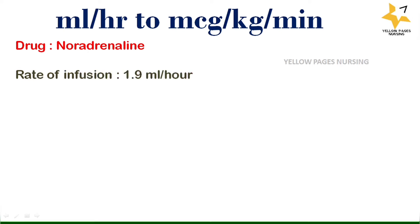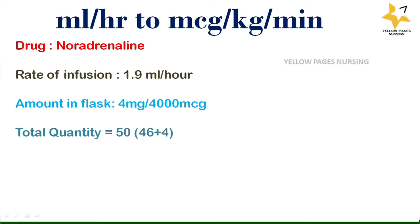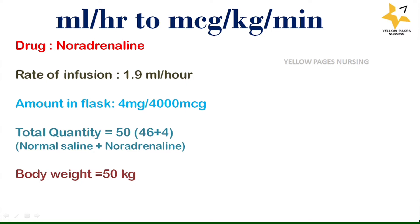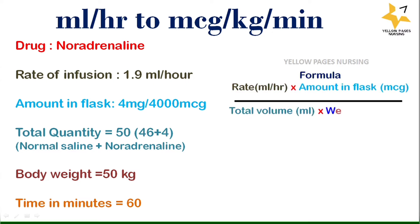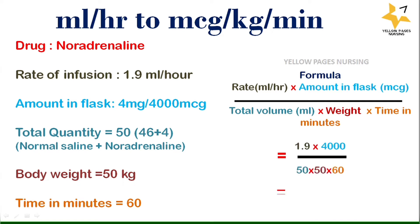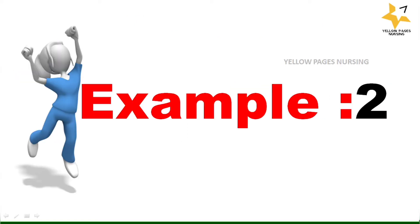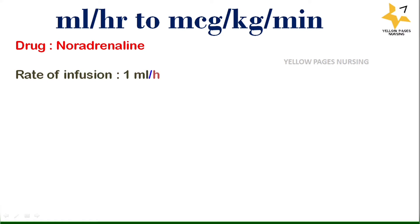The drug is noradrenaline, rate of infusion is 1.9 ml per hour, amount in flask is 4 mg — when converted, that gives 4,000 micrograms. Total volume is 50 ml (46 ml normal saline plus 4 ml noradrenaline), body weight is 50 kg, and time in minutes is 60. Applying all values into the formula, we get the answer: 0.05 micrograms per kg per minute.